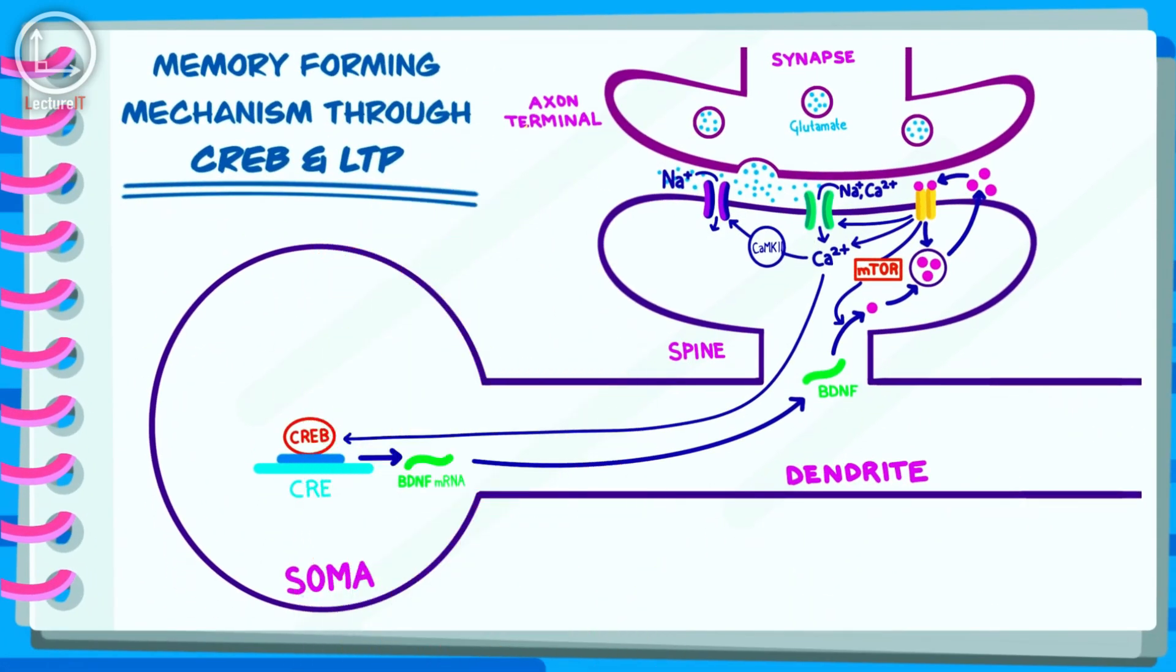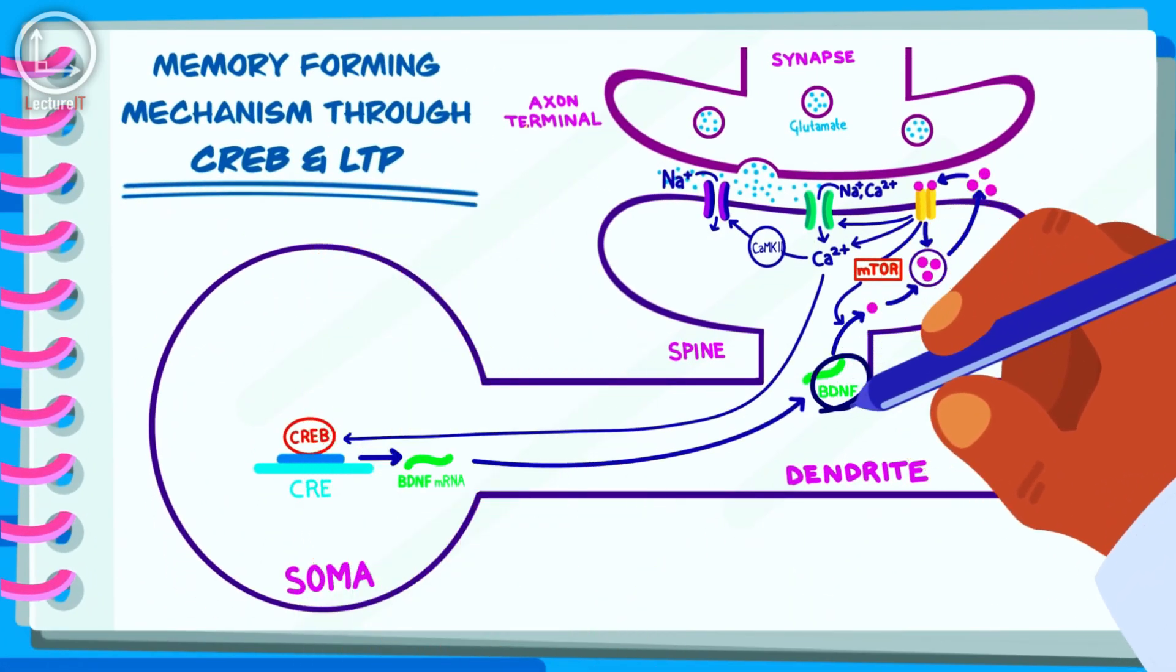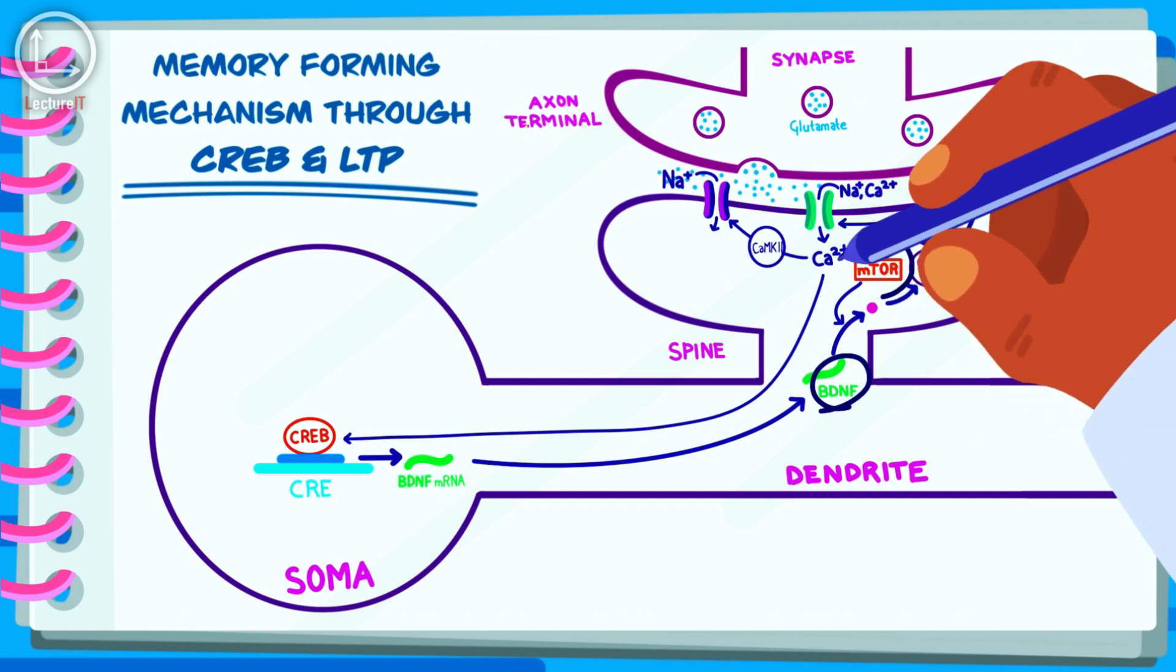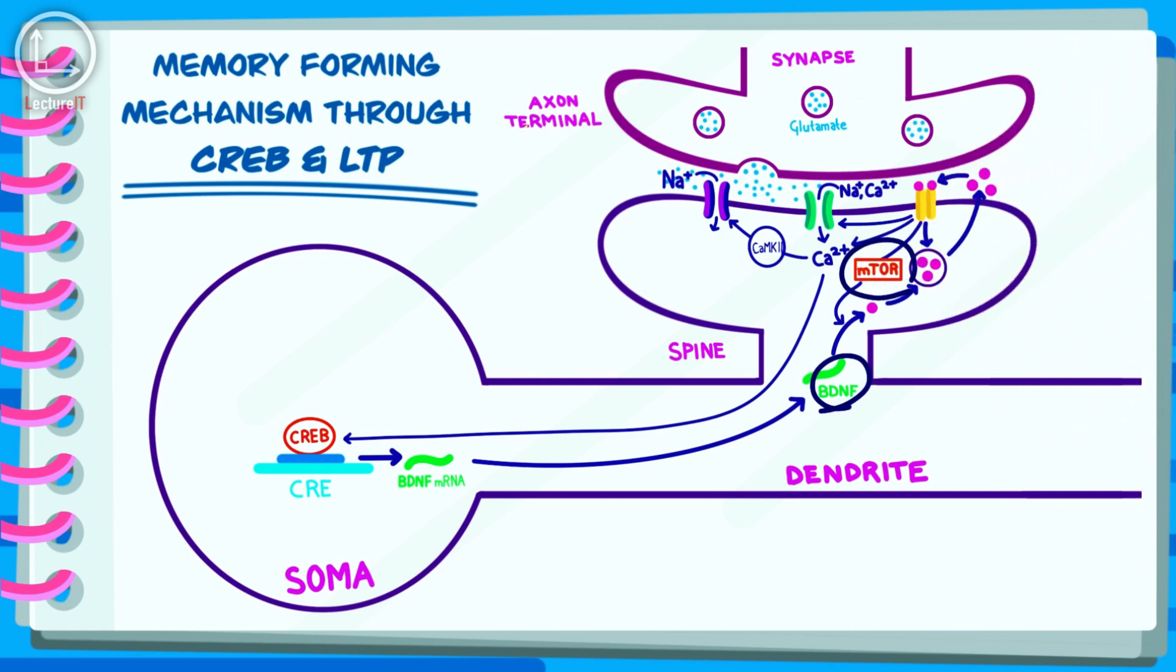Additionally, other molecular players, such as brain-derived neurotrophic factor and signaling pathways like the mammalian target of rapamycin or mTOR pathway, are also involved.